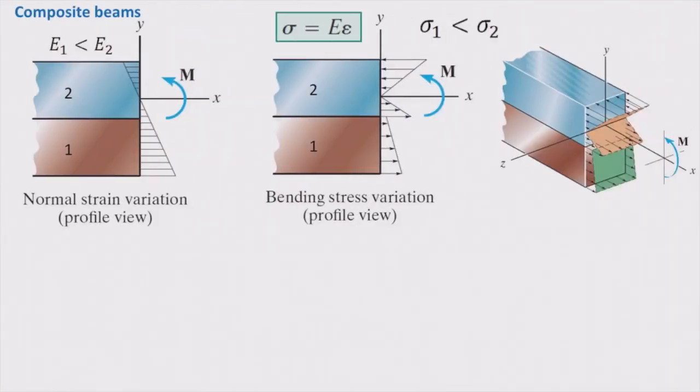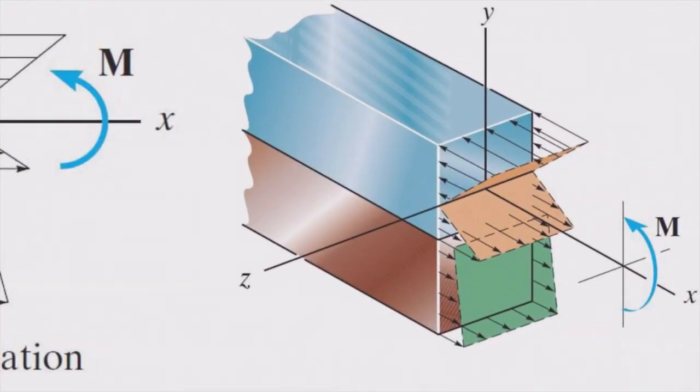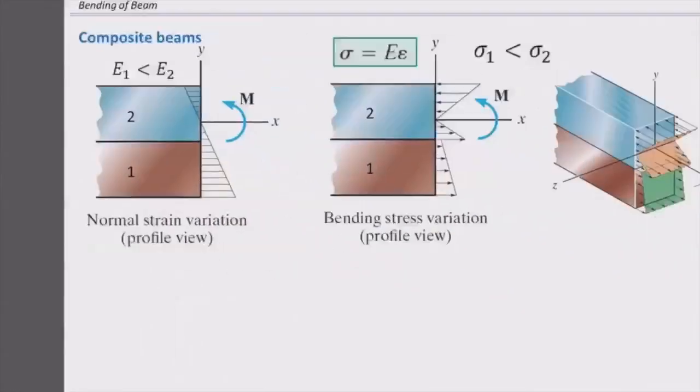Let me show the stress distribution in a three-dimensional way. As you can see, the inconsistency of stresses at the bonding point makes stress calculation difficult. There is one trick we use to resolve this issue: simply increasing or decreasing the width of one element to convert it into an equivalent section made from just one material. Let me show it here.